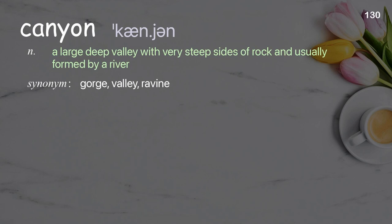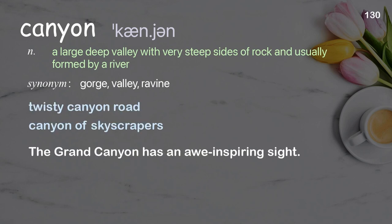Canyon: a large, deep valley with very steep sides of rock, usually formed by a river. Examples: twisty canyon road, canyon of skyscrapers. The Grand Canyon has an awe-inspiring sight.